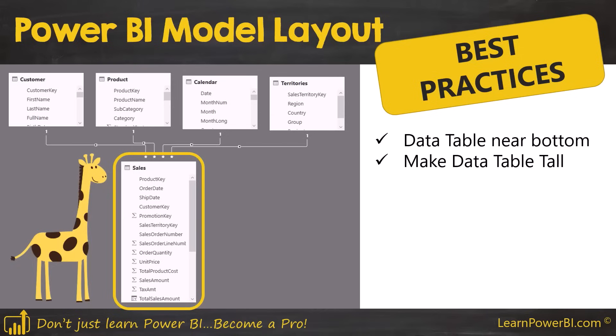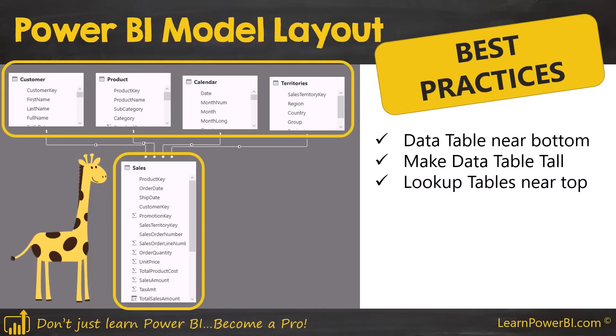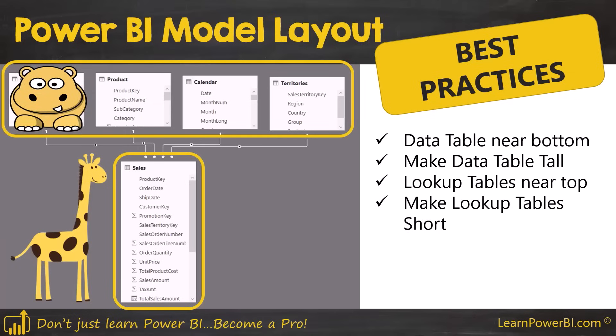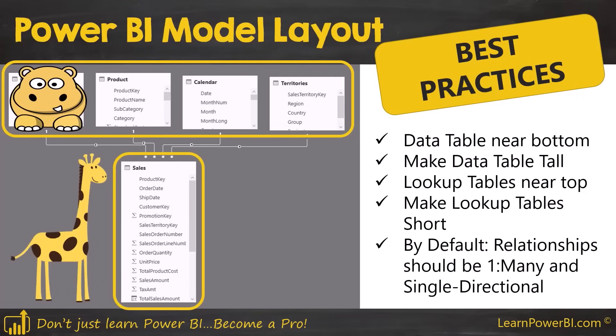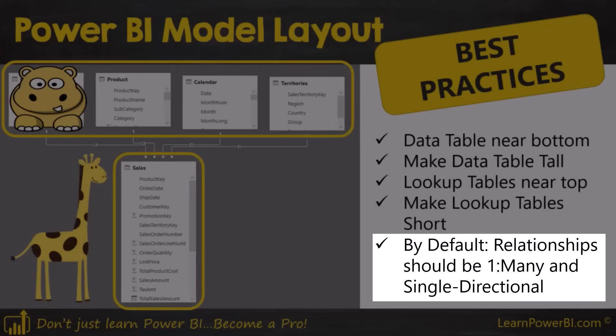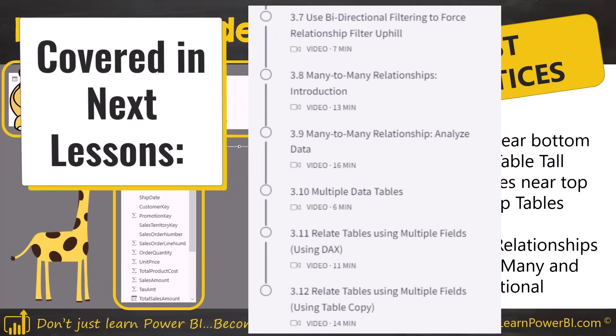Place your lookup tables near the top, and make them squat — short — to remind yourself these are the lookup tables. Obviously they typically have a large number of columns, but making them squat reinforces this fact visually. Another thing to look for in the relationship view is that the relationships should by default be one-to-many and single-directional. We will go into a lot more detail there.